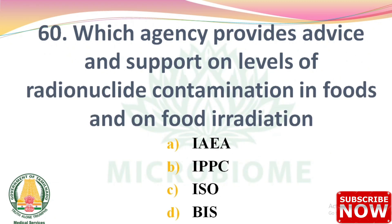Next question: which agency provides advice and support on levels of radionuclide contamination in foods and on food irradiation? Options: IAEA, IPPC, ISO, BIS. The right answer is Option A: IAEA.